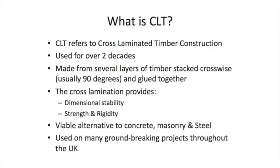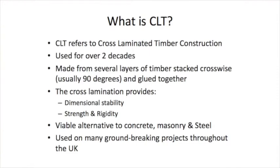CLT refers to cross-laminated timber construction that has been used for over two decades, mainly on the continent. It's made from several layers of timber stacked together crosswise, normally at 90 degrees. The timber typically comes in three-ply or five-ply, and for structural loading it's the vertical ply which takes the loads — the horizontal plies are discounted. It gives very high dimensional stability, strength and rigidity, and is a viable alternative to concrete, masonry and steel, so in medium to high-rise building it's particularly good.